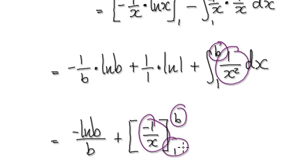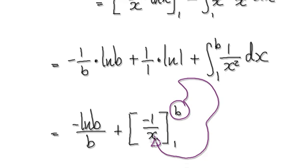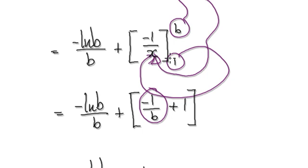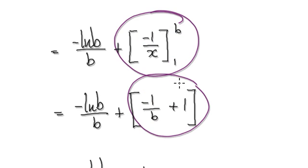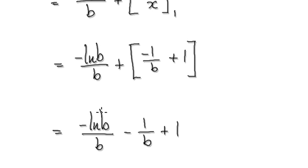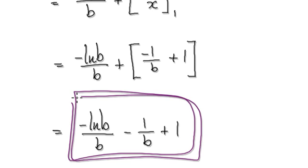Evaluate from 1 to b. Put b in to get this, then take away: put 1 in to get this. There's a negative here, and working through that takes you to this expression. Tidying everything up gives us this result.